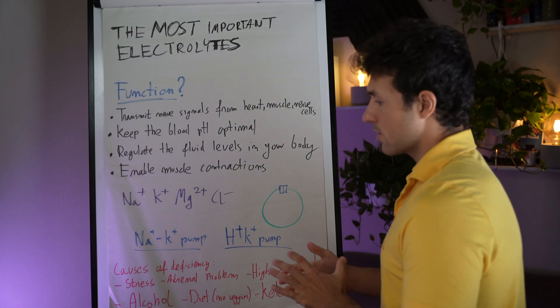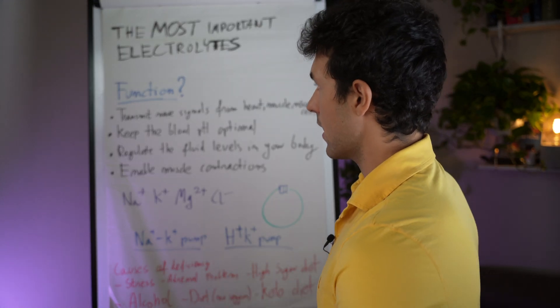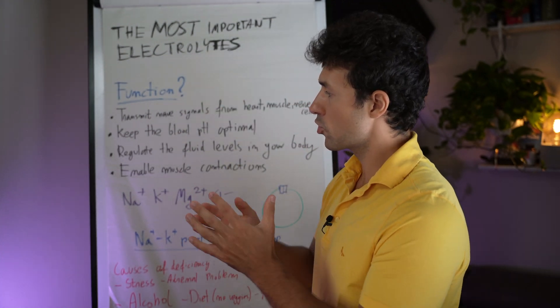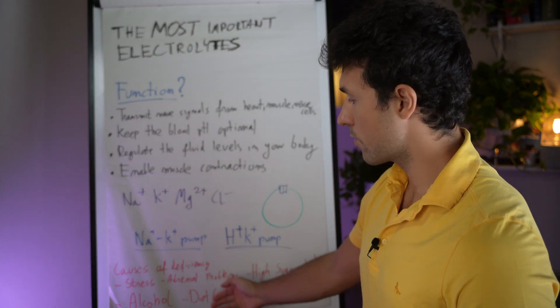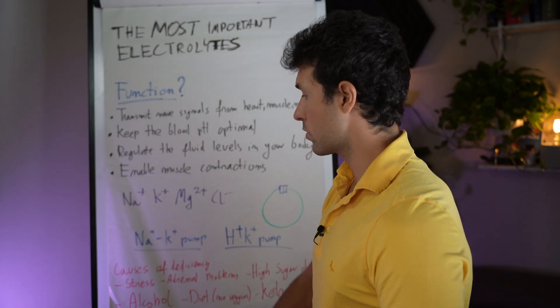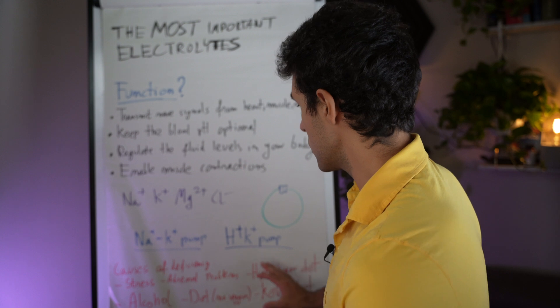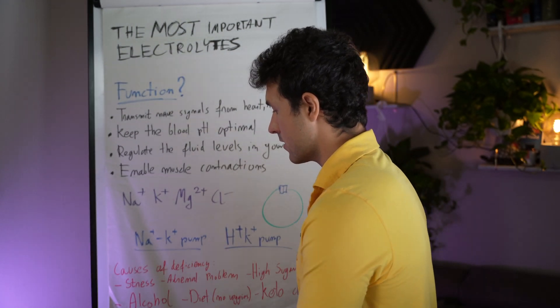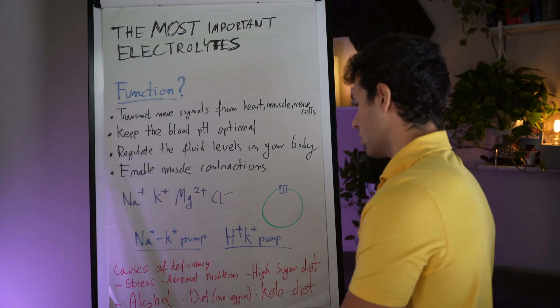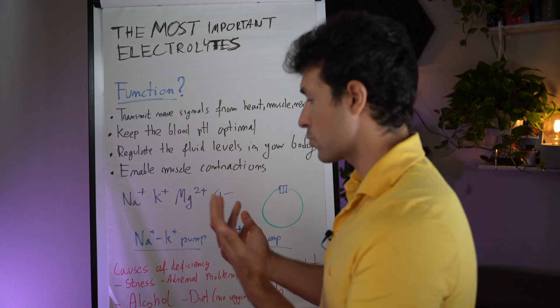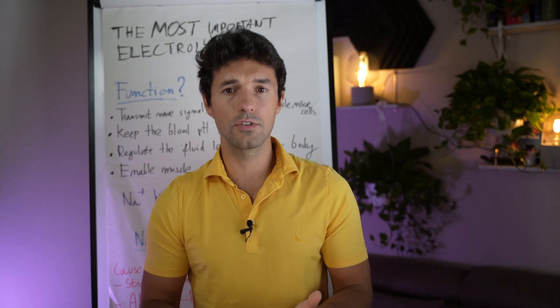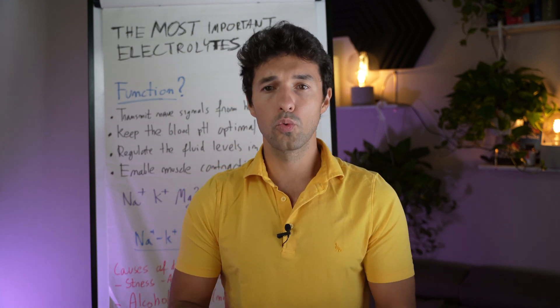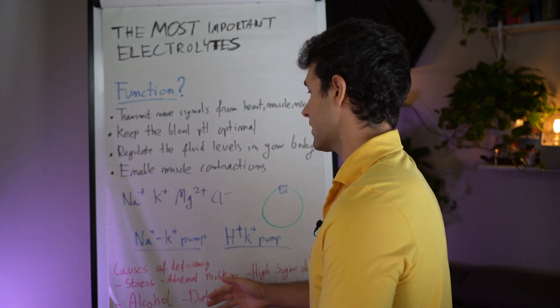So yeah, that's it when it comes to causes and also functions. If you want to make sure that you are not deficient, what I usually recommend is to increase your veggie intake, also make sure that you work on the causes and to fix the stress, adrenal problem, remove alcohol, remove this high sugar dieting, and to watch our videos on this channel. This will definitely help you to work on these other aspects.